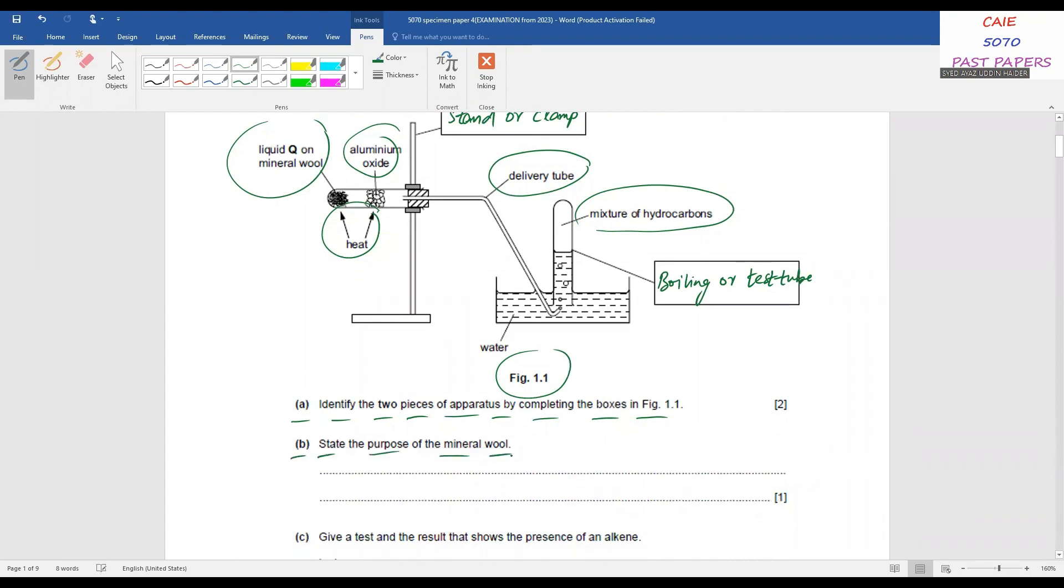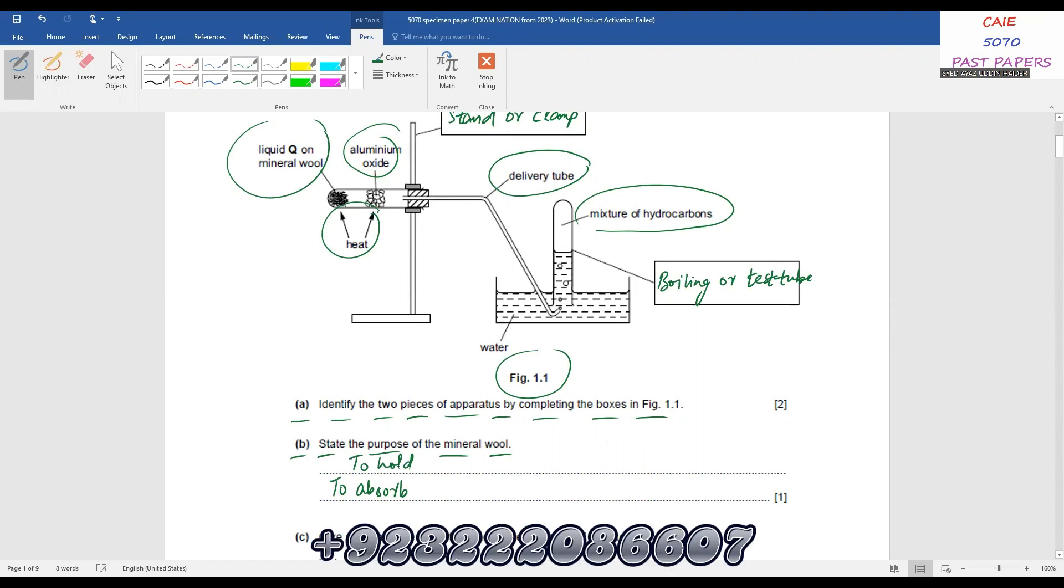State the purpose of the mineral wool. You can see here mineral wool is holding or absorbing this liquid Q. You will simply write to absorb, to hold, or you can even write contain liquid Q.